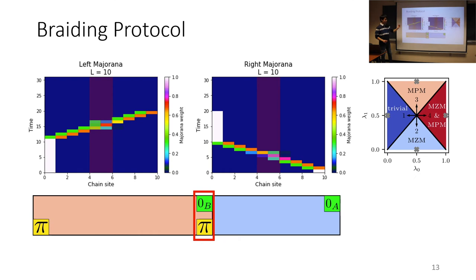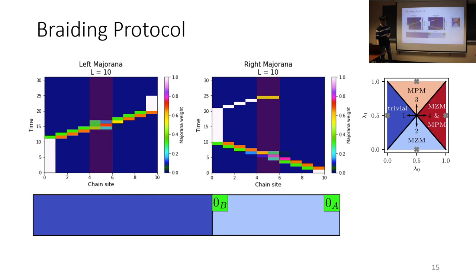We move the pi mode in the middle towards the left. The zero mode on the left moves towards the middle and it moves past that coupled pair with no issues because they're separated in the quasi-energy spectrum so they don't hybridize. We take the pi, we move it back towards the middle, destroy the pis and then we move the zero in the middle to the left.